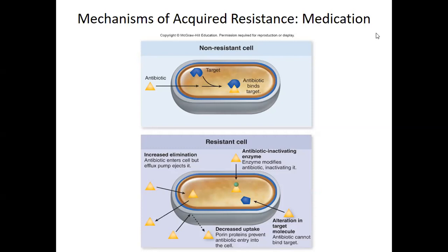Bacteria can also alter the target — change the shape or structure of something the medication is trying to reach, so the drug can't interact with it anymore. And we talked about beta-lactamase — an enzyme that can neutralize the drug. These are the basic mechanisms of antibiotic resistance.